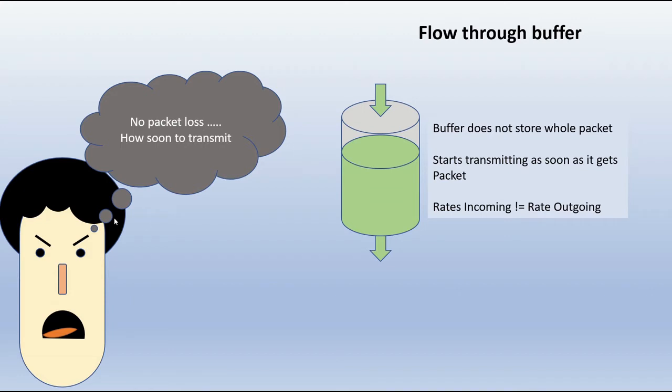Here we have Network Bob, a network engineer who is trying to solve this problem of not having packet loss, how soon can he transmit the packets without packet loss, and how to prevent all the troubles that his boss wants him to avoid.